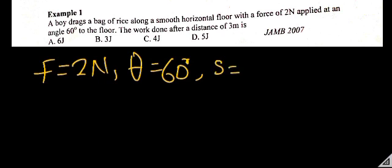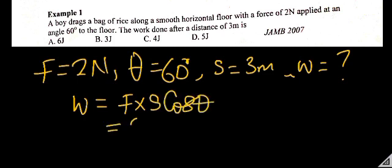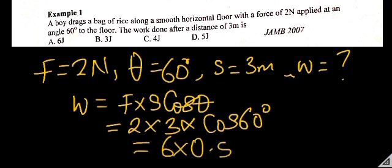To get the work done, we know that work is equal to force times distance times cosine theta. So here the force is 2 newtons, the distance is 3 meters, times cosine of 60 degrees. We know that 2 times 3 is 6, and cosine 60 is 0.5, so 6 times 0.5 equals 3. Therefore the work done is 3 joules.